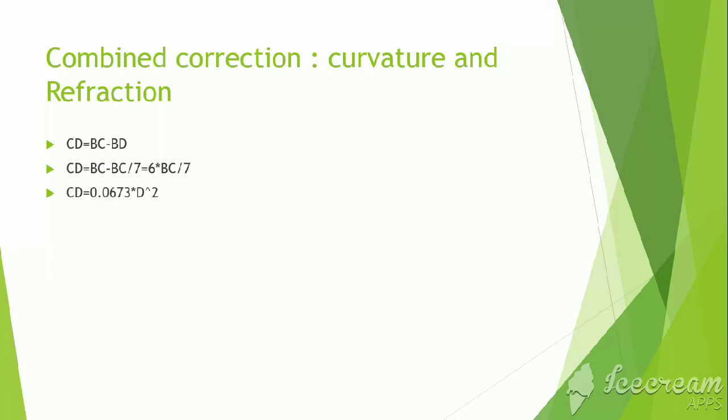C equals 0.067. So, the total correction comes to 0.067 times D^2.